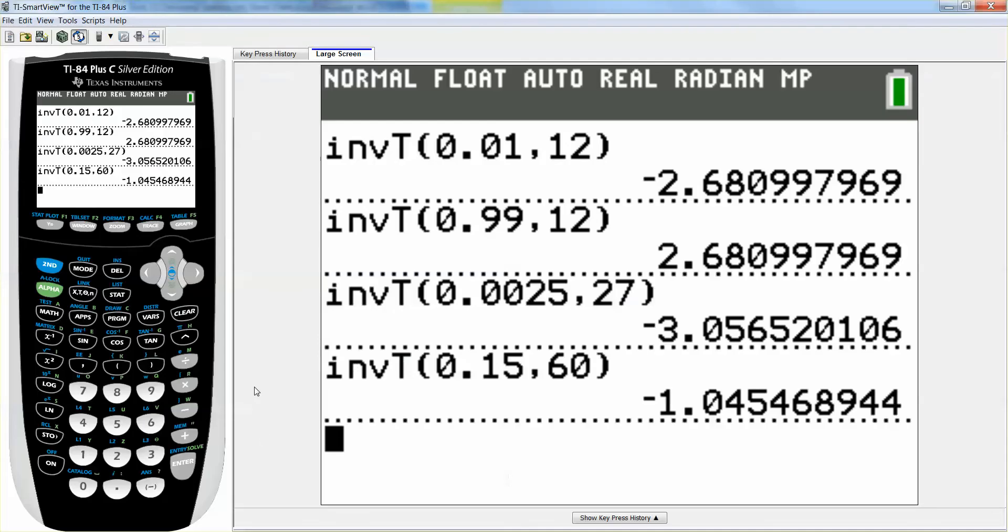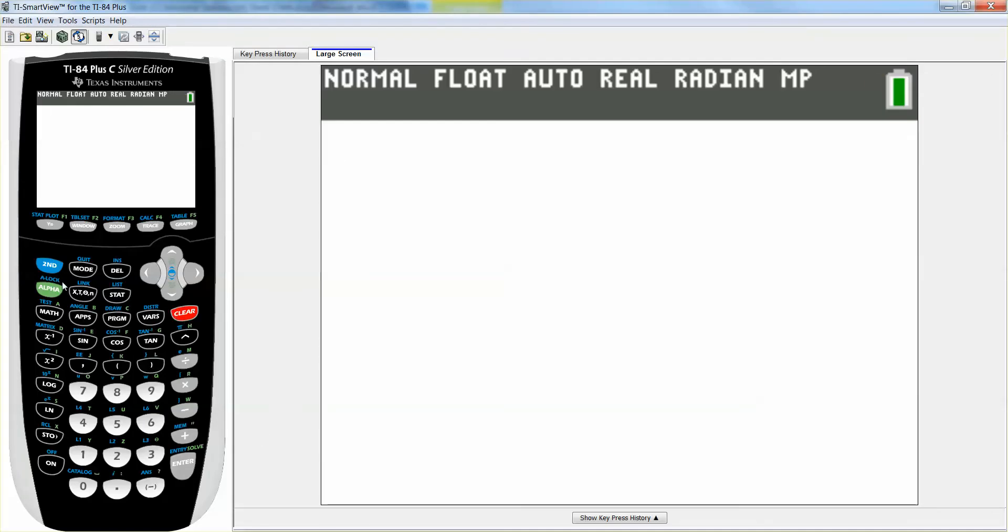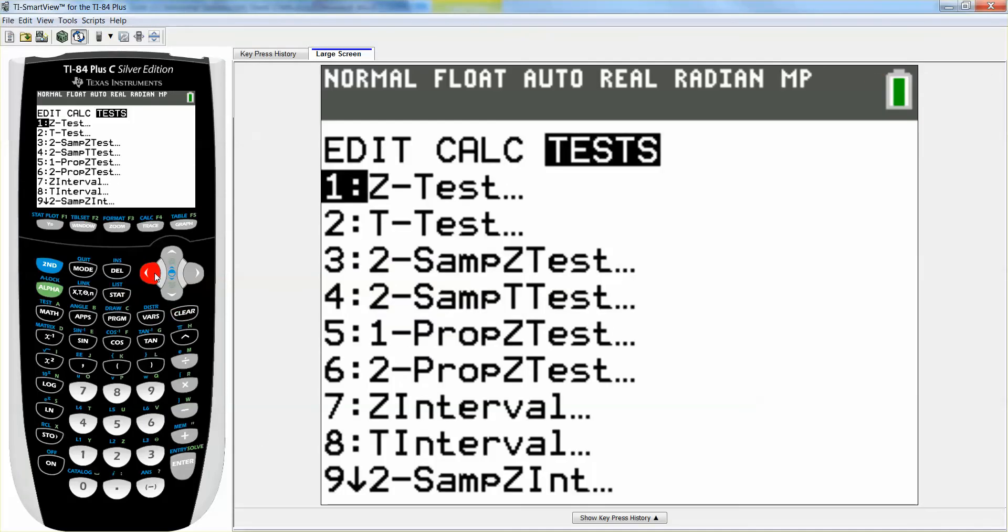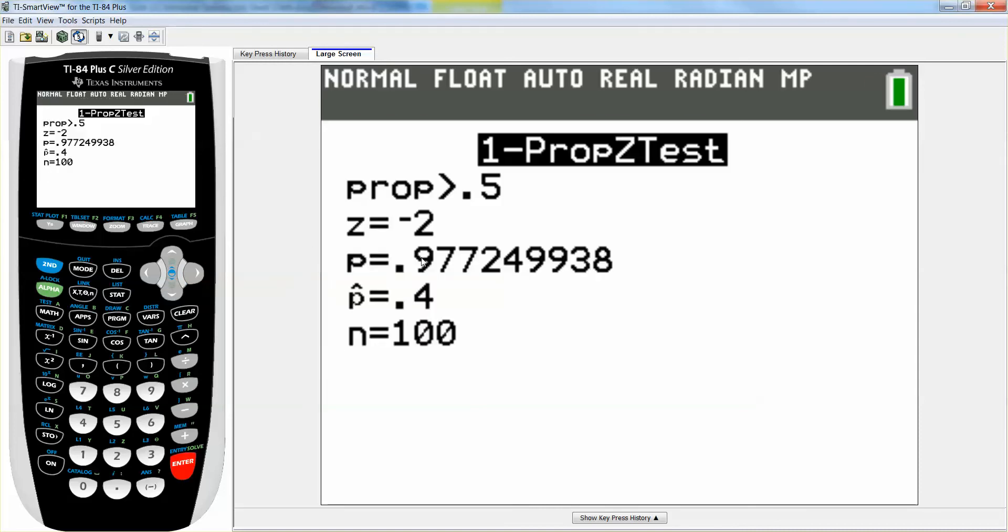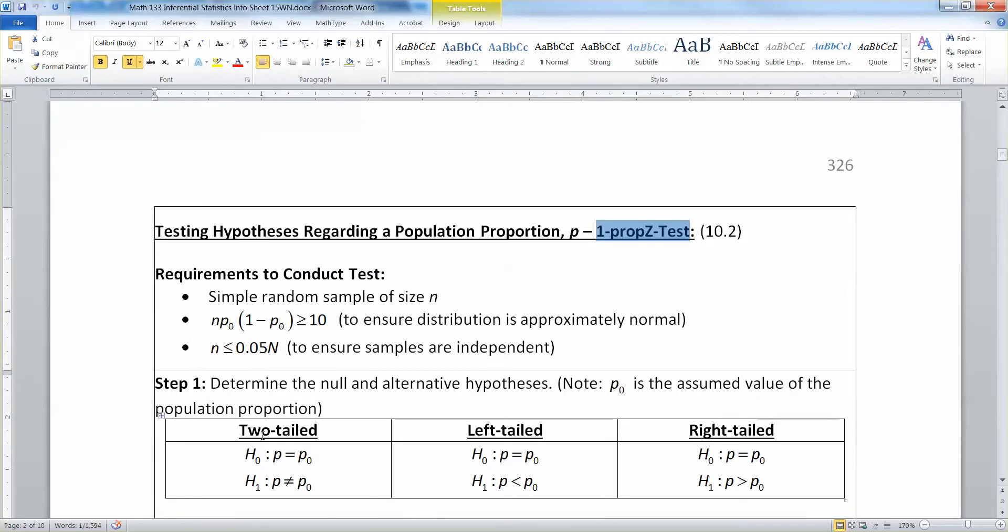Speaking of which, the calculator entry for those is the one prop z test. So let's go back and look at the calculator for a second. Okay, so when you're in stat and tests, the one prop z test is number five, right, one prop z test. And it's going to ask you what your p0 is and then your x and your n. And then you're going to tell it if it's a two-tailed test, that one, a left-tailed test or a right-tailed test. And there you go.